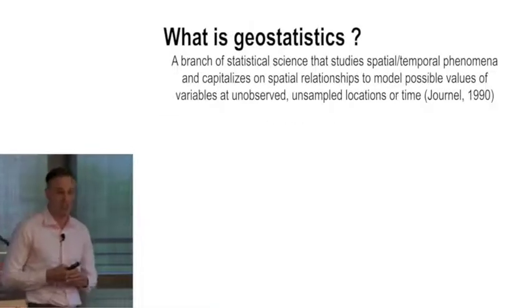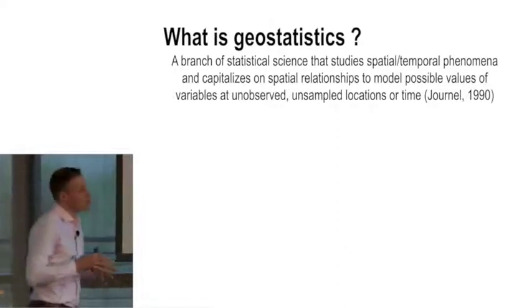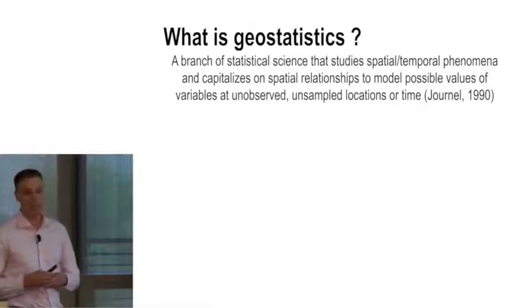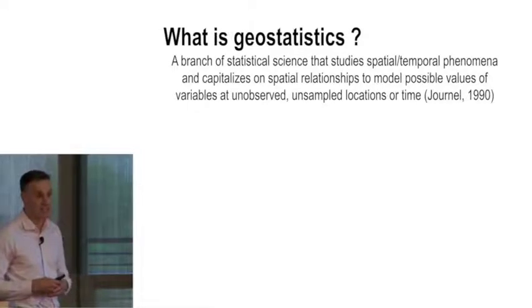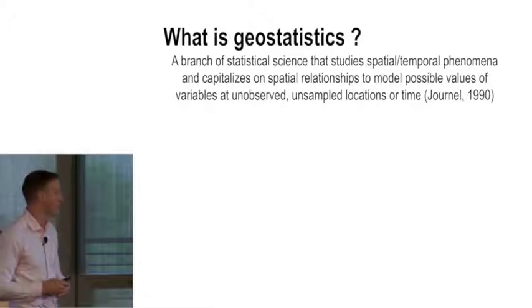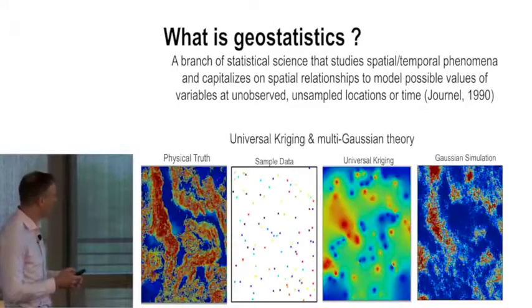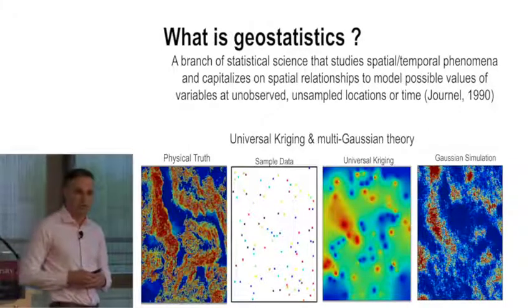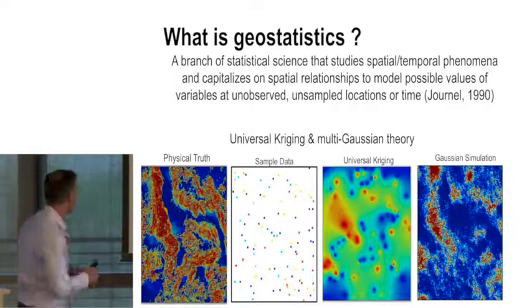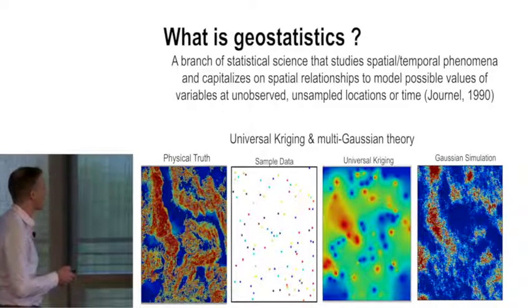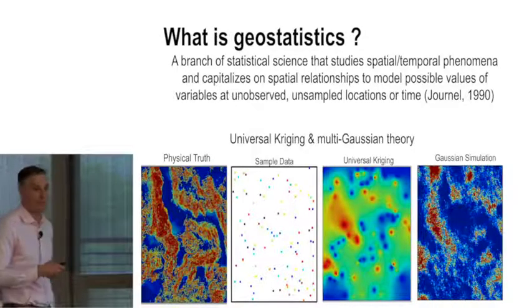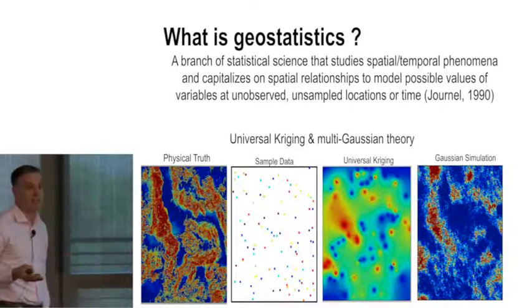So traditionally, I've worked a lot in geostatistics, which is where I started my career. This is a field that has been developed tremendously at Stanford. It started in the mines in South Africa by Danny Krige, then was formalized by George Matheron in the 1960s. One of his students, André Journel, came to Stanford and built this really practical application of geostatistics in many areas of the earth sciences. André retired five years ago. The bread and butter of traditional geostatistics is this kind of problem: we have physical truth, we've got some limited sample data, and then people do either estimation, which is called universal kriging, or they do simulation, which often is done in a multi-Gaussian framework, and you create multiple realizations of the truth.